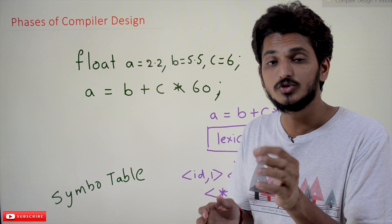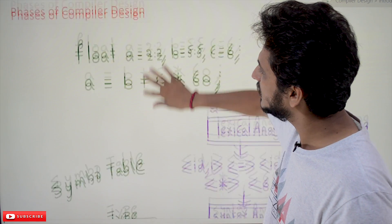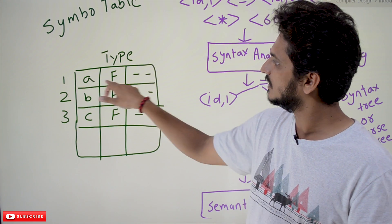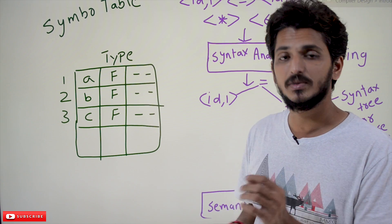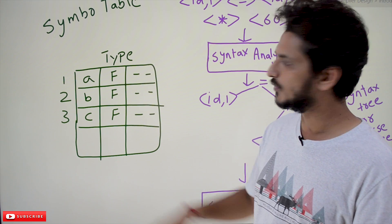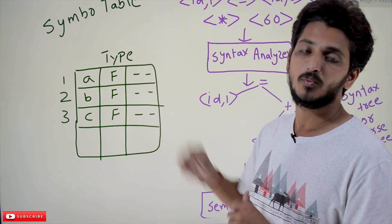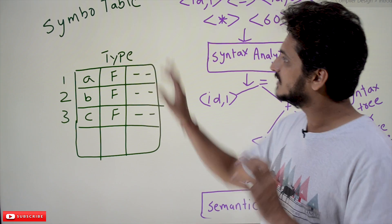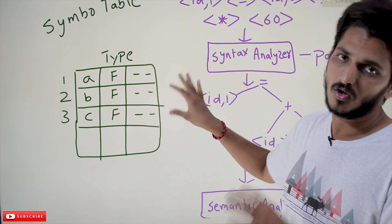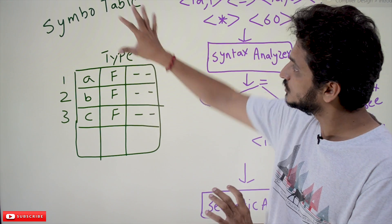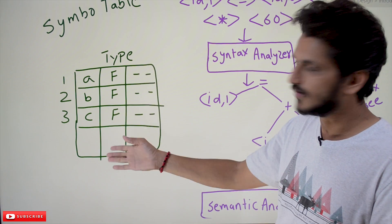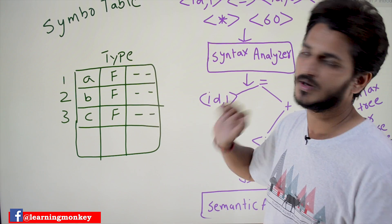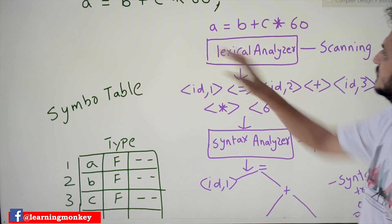These separations are called tokens. Whenever it separates identifiers, it maintains a table called the symbol table. 'a' is an identifier placed in the first line, so its type is 'f' meaning floating point. The second identifier is 'b' — floating point; 'c' — floating point. It maintains many values regarding those identifiers. The symbol table and what factors it considers will be discussed in a separate video. For now, remember it maintains a symbol table for a list of identifiers and their types, which are needed to compile the program.